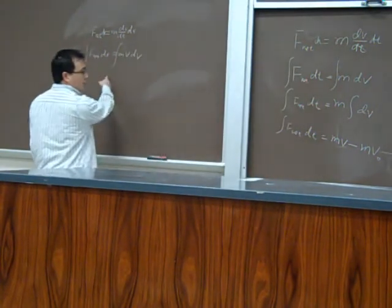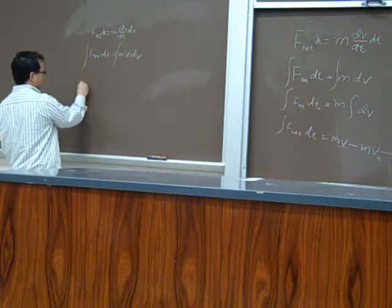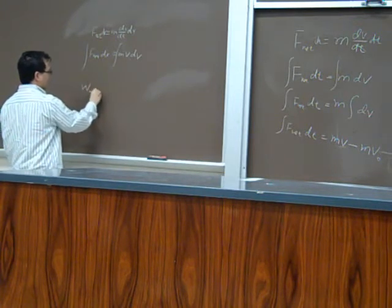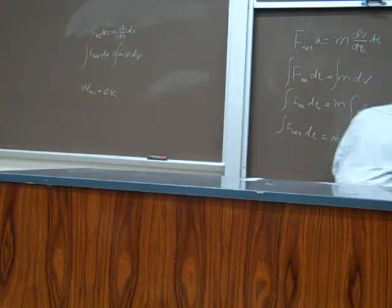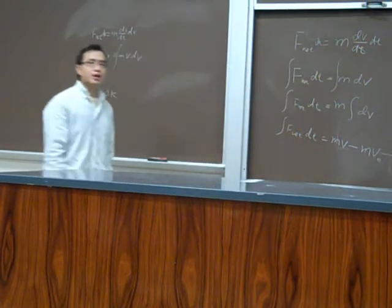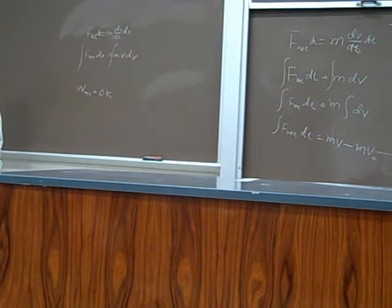And from that, we get the work-energy theorem, w net equals to delta k. Here, in fact, it's J net equals to delta P. This studies the same motion from different points of view.